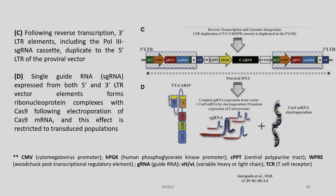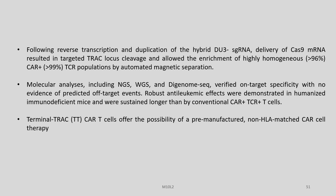Following reverse transcription as shown in figure C, 3-prime LTR elements including all sgRNA cassettes duplicate to the 5-prime LTR of the proviral vector. In figure D, the single guide RNA expressed from both 5-prime and 3-prime LTR vector elements forms ribonucleoprotein complexes with Cas9 following electroporation of Cas9 mRNA, and this effect is restricted to the transduced populations only. Following reverse transcription and duplication, delivery of Cas9 mRNA resulted in targeted TRAC locus cleavage and allowed enrichment of highly homogeneous CAR-positive TCR-negative populations by automated magnetic separation.